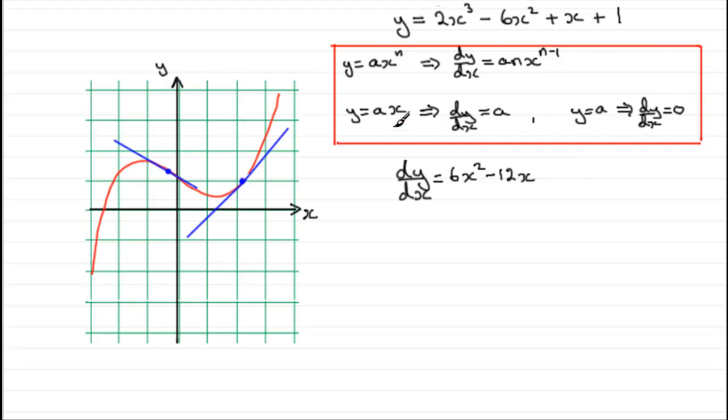What about this term here, plus x? This is a term like this. It is a plus 1x, so our value of a is 1. And when we differentiate it, we just get the a value. So, in this case, it would be plus 1. And for the last term here, the constant, constants differentiate, if they're on their own, to 0. So, we could write plus 0, but that would be a bit of a waste of time, so we'll just leave it. So, dy by dx equals 6x squared minus 12x plus 1. And this is our gradient function.